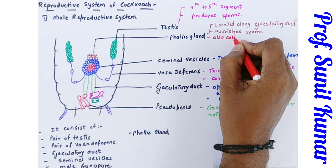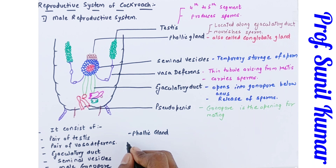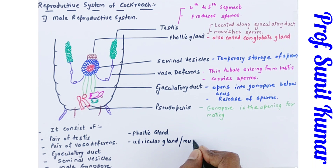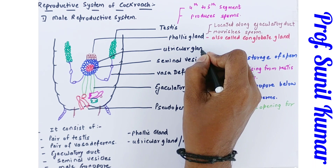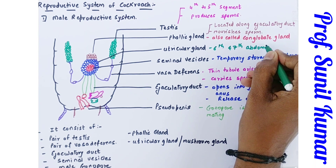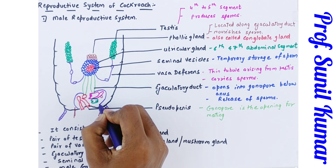Then we have the utricular gland, also called the mushroom-shaped gland. The blue colored structure is the utricular gland. This gland plays a very important role in the reproductive system. It is present in the sixth and seventh abdominal segments of the male cockroach — this is an important question for NEET. The utricular gland provides nourishment to the sperm.